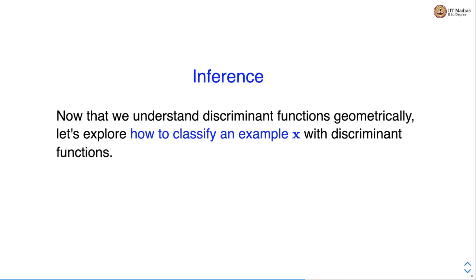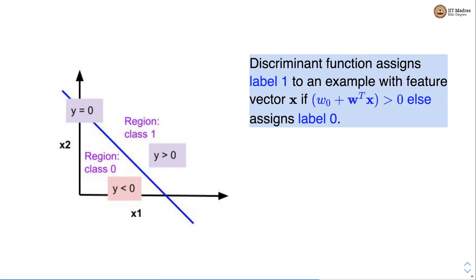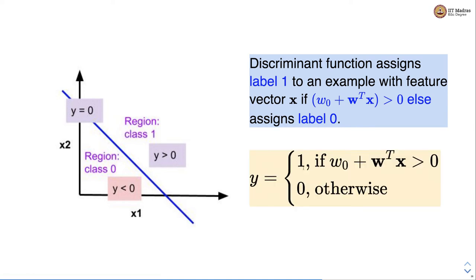To classify an example x using discriminant functions: assign class 1 if w0 + w^T x > 0 (i.e., y > 0), meaning the point lies in the region belonging to class 1. Otherwise assign class 0, where y < 0. Mathematically: y = 1 if w0 + w^T x > 0, else y = 0.